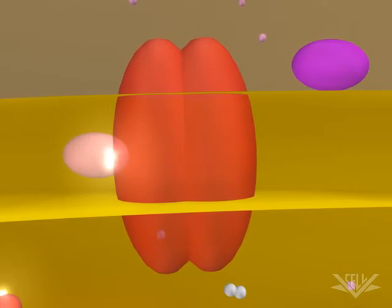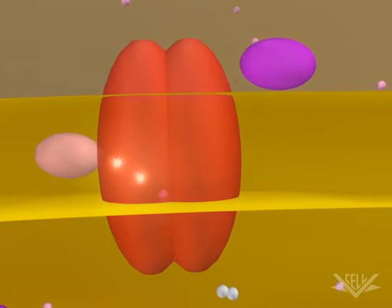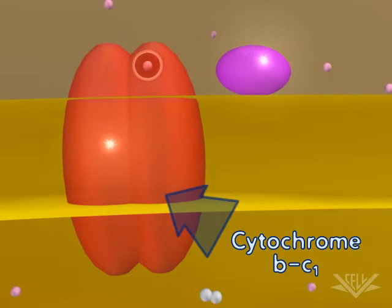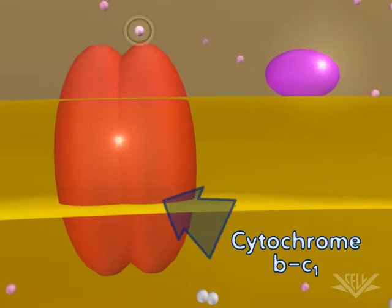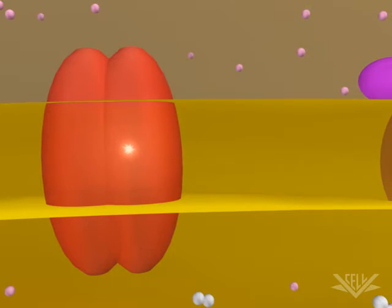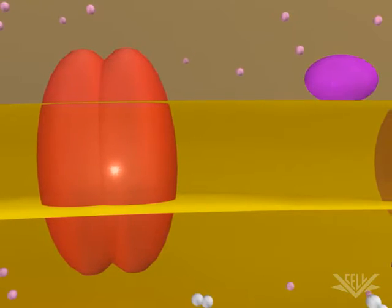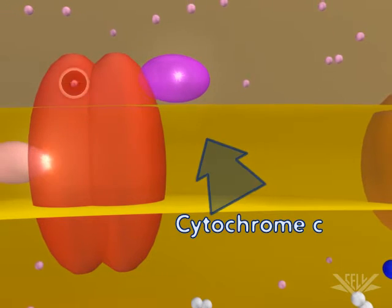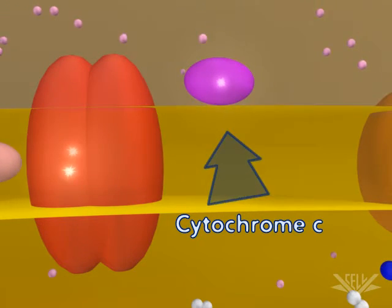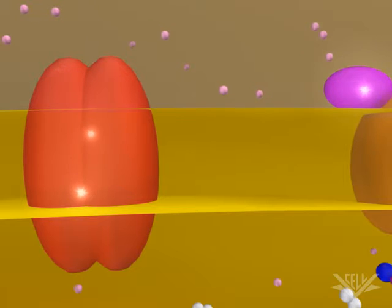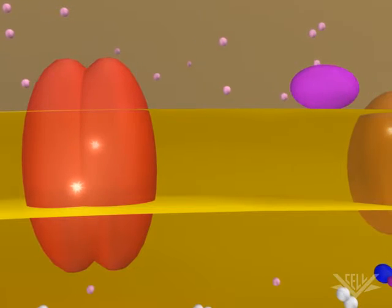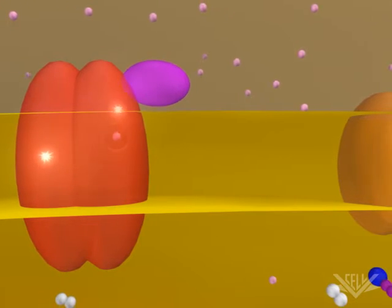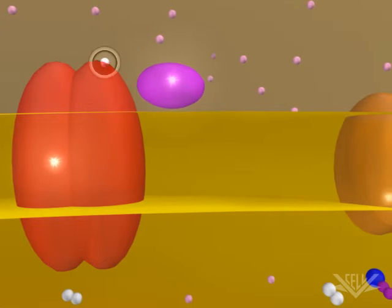Ubiquinone is called a mobile transfer molecule because it moves the electrons to the cytochrome BC1 complex. Each electron is then passed from the cytochrome BC1 complex to cytochrome C, which accepts each electron one at a time. One hydrogen ion is pumped through the complex as each electron is transferred.